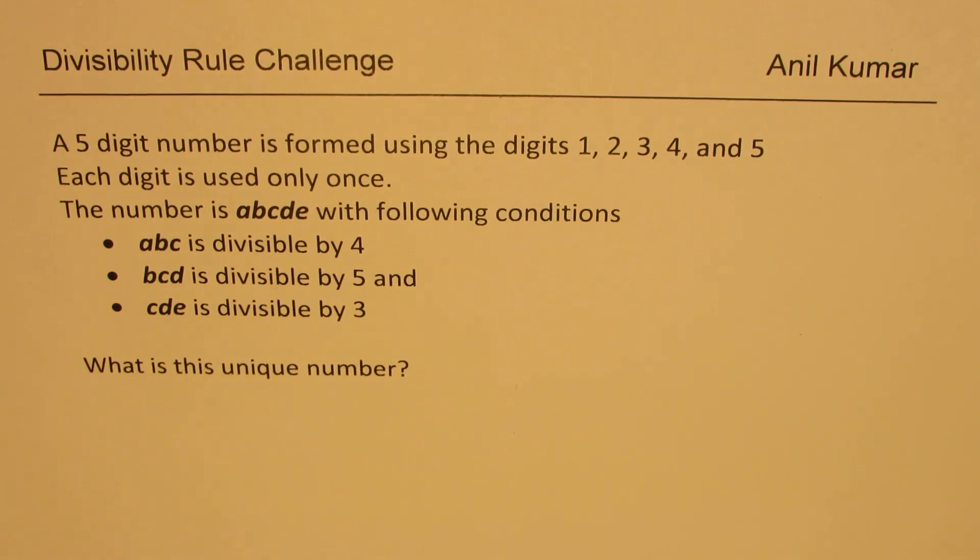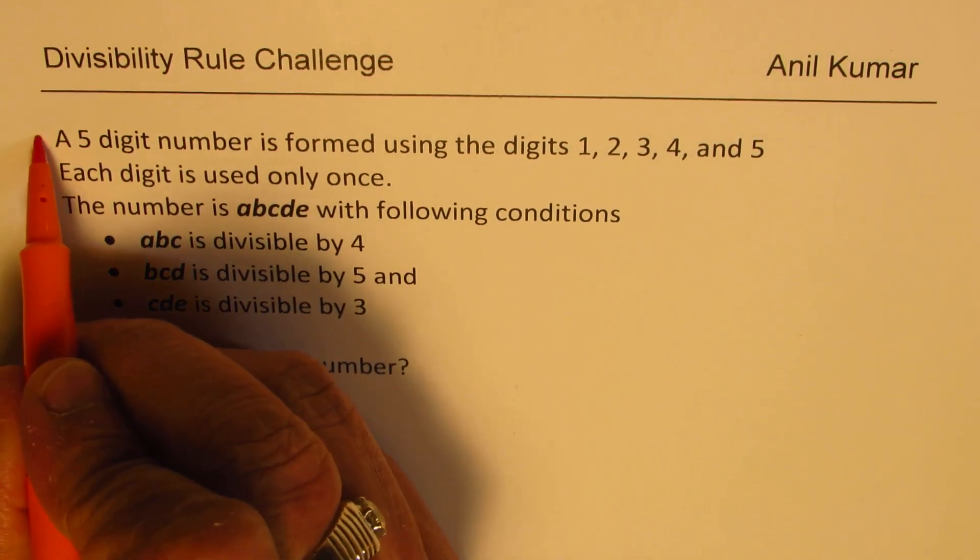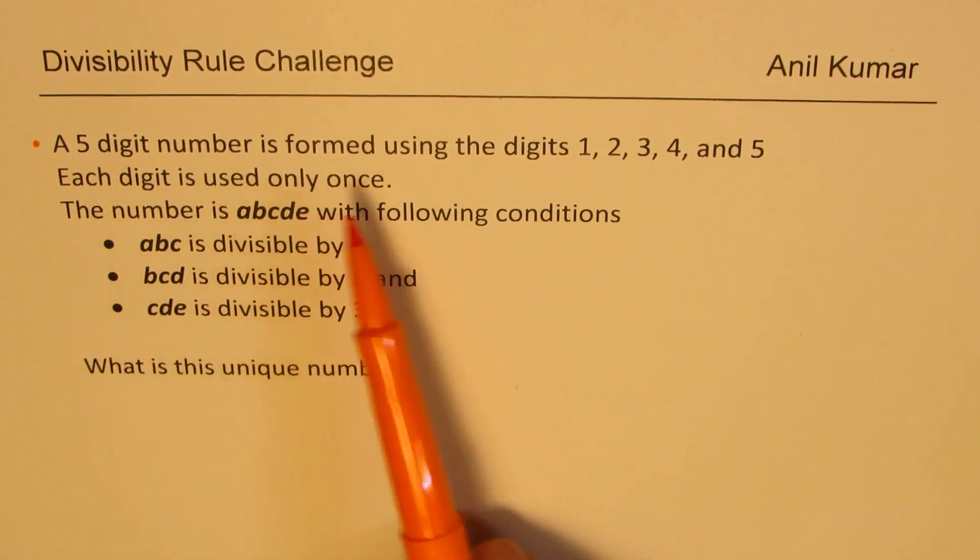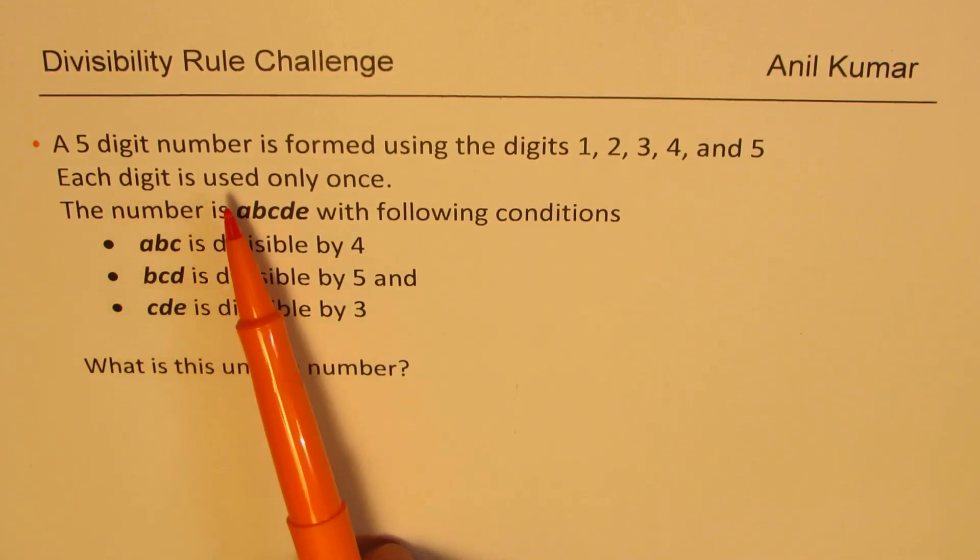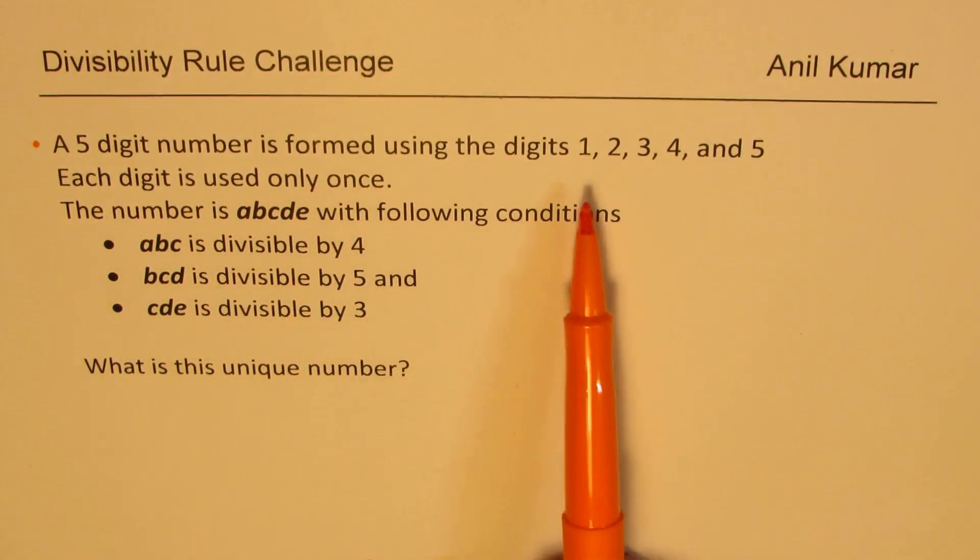I have placed this as a challenge question on divisibility rules. The question here is: a five-digit number is formed using the digits 1, 2, 3, 4, and 5. Each digit is used only once, that means no repetitions.